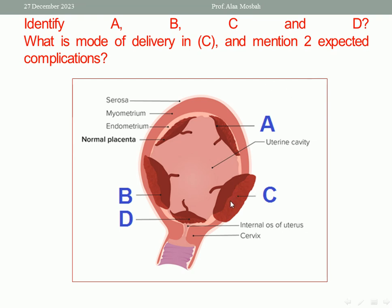Mention two expected complications. Of course, postpartum hemorrhage and hysterectomy with all its complications, and injury to the bladder during the operation — because placenta percreta may invade the bladder wall. So there is a possibility of bladder injury and the need for bladder repair.